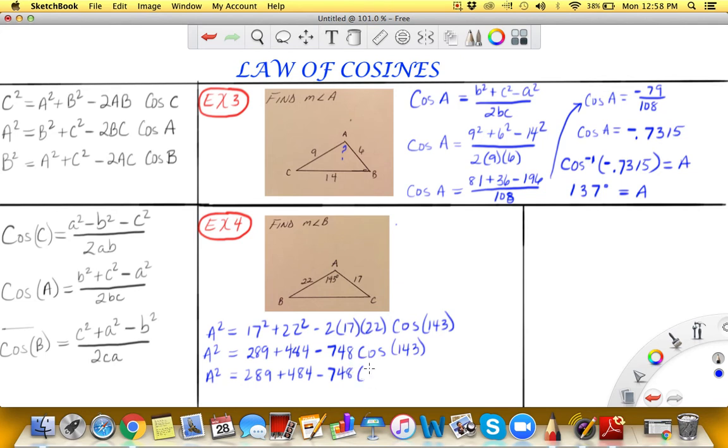The cosine of 143 degrees is negative 597.4. I'm sorry, let me erase that. It's actually equal to cosine of 143 is equal to negative 0.7986 and we'll continue on.